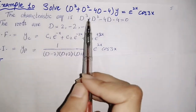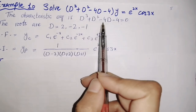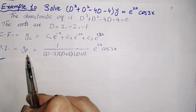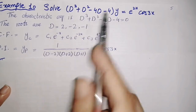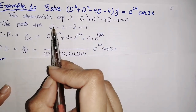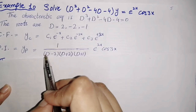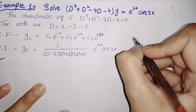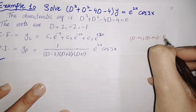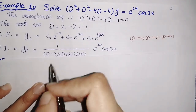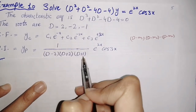First, calculate yc. The characteristic equation is formed; since it is a D-cube equation, we find roots using synthetic division. First check that 2 is a root, then solve further. For the particular integral, write 1/(D³ + D² − 4D − 4). Factor this in roots form: 1/[(D − 2)(D + 2)(D + 1)], since roots are 2, −2, and −1.